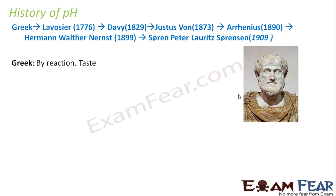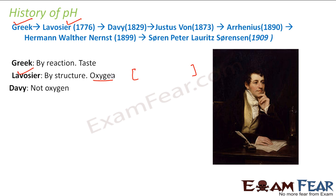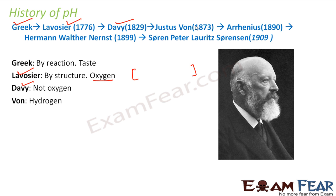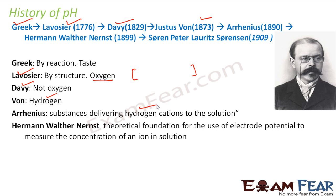Now let's understand the history of pH — how this pH came about. The Greeks defined acid by taste. Then Lavoisier came and tried to define it by structure; he found oxygen in acids and mistakenly thought oxygen was responsible for acidity. He even coined the term oxygen, so he had a natural tendency to attribute acidity to it. But Davy proved that oxygen is not the key element. Then Vaughan found that it was actually hydrogen, and Arrhenius found that acid is something which delivers hydrogen cations to solutions.